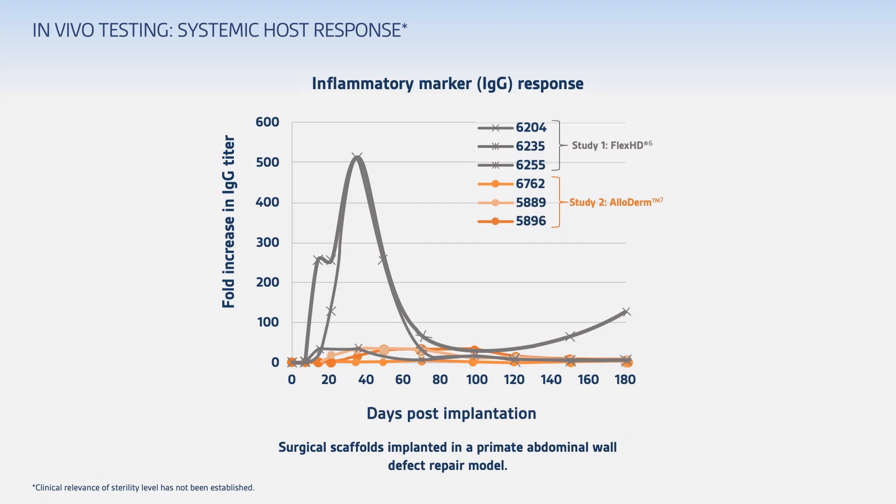As you can see from this graph, overall, the animals implanted with Flex HD had a higher IgG titer, showing a greater inflammatory response compared with Alloderm, which had a minimal to moderate IgG titer.